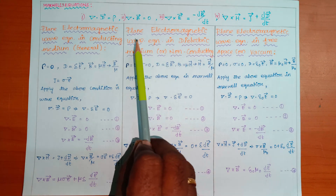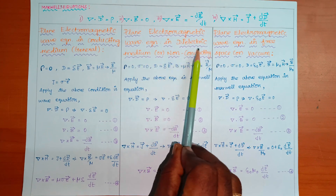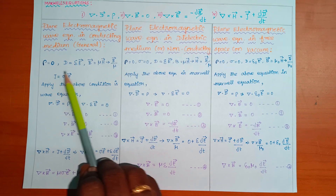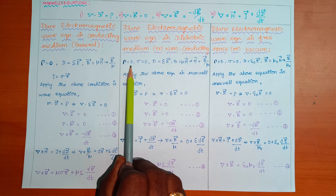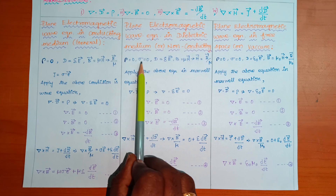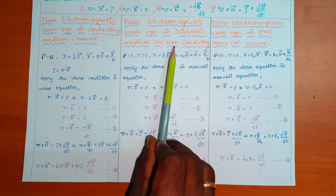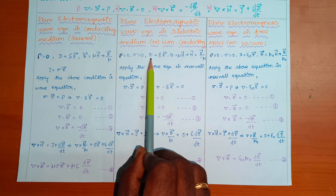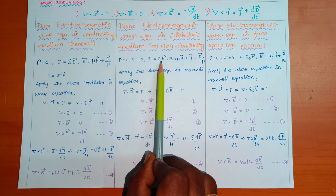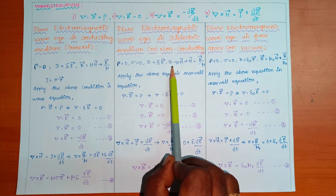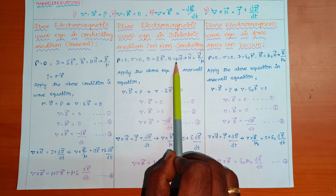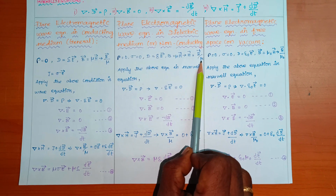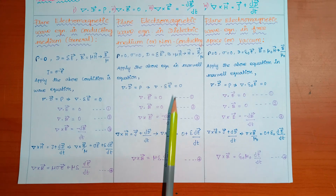For the plane electromagnetic wave in dielectric medium, the conditions are: sigma equal to zero and rho equal to zero, since it is a non-conducting medium. The constitutive relations remain D equal to epsilon E and B equal to mu H, so H equal to B by mu.